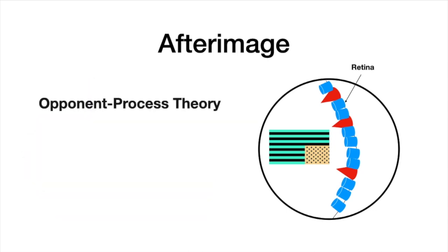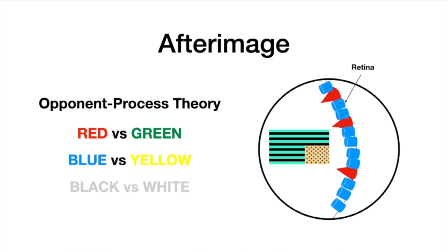And let's take a look at opponent-process theory. Opponent-process theory proposes that the cones in our retina respond to the light that is out there in the real world, and that every color is paired with another color. And the primary antagonistic colors are red versus green, blue versus yellow, and black versus white.